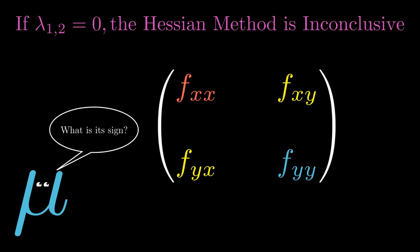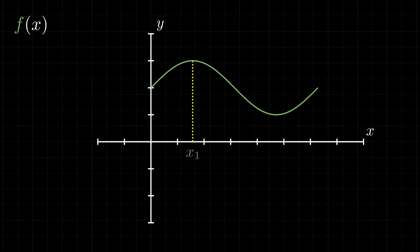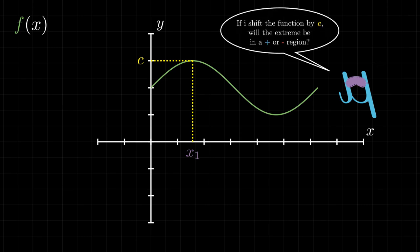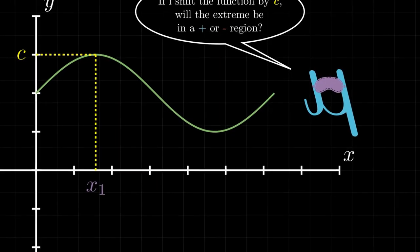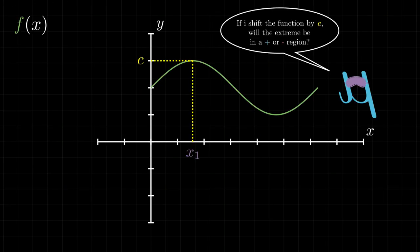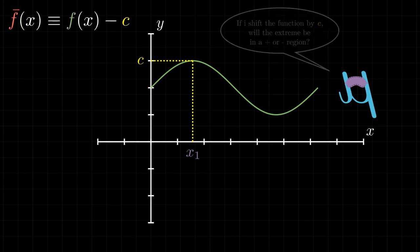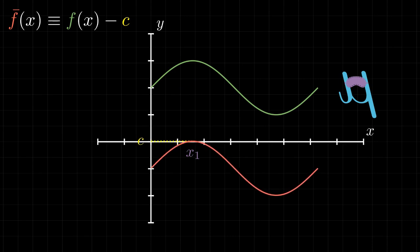In fact, let's imagine we want to classify an extreme point of a one variable function. We only know that at this point the function has a value, that we call C. We have to admit that we are helping ourselves by watching this curve. But a person who doesn't have access to this graph, how can he know if this point is a maximum or a minimum? Well, if he is smart, he might search for a clue. Ask something like, if I shift the function by C, will the extreme be in a positive or a negative region? Okay, maybe he is too smart. Let's follow his reasoning step by step. We could in fact start by creating a function that we call F bar, equal to F minus C. Obviously, this function will be equal to F, except for the fact that it is lowered or raised by C, and that at the extreme point this F bar is equal to 0.